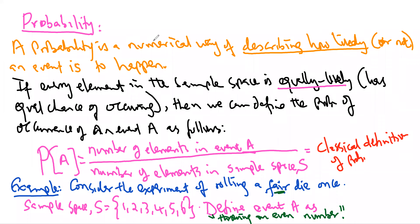This definition we've been using is called the classical definition of probability. Next, let's look at the axioms of probability — rules or laws generally accepted concerning probability that don't need to be proved. We will list three axioms of probability.